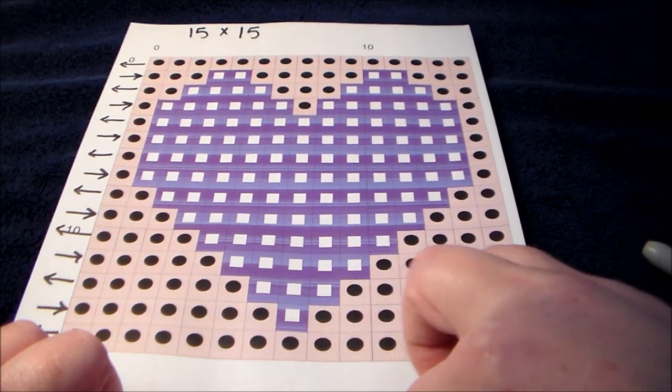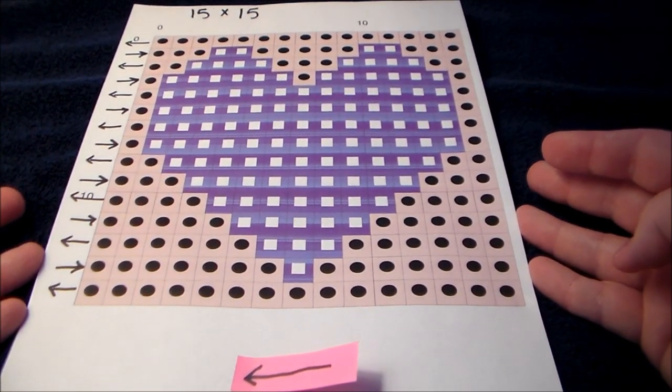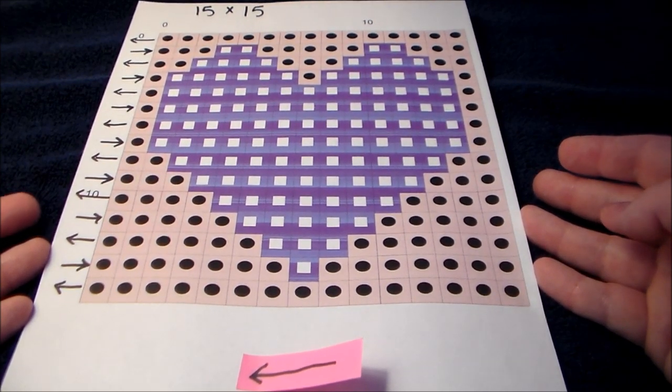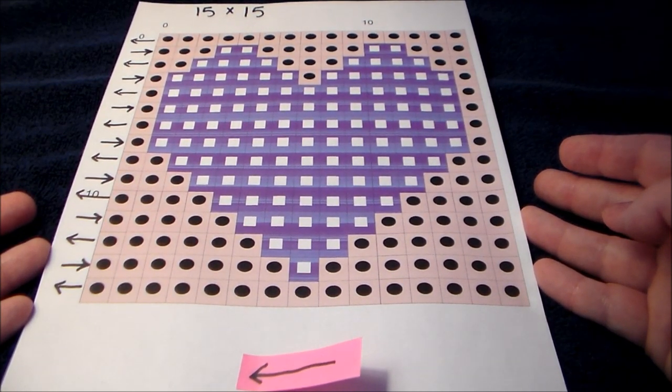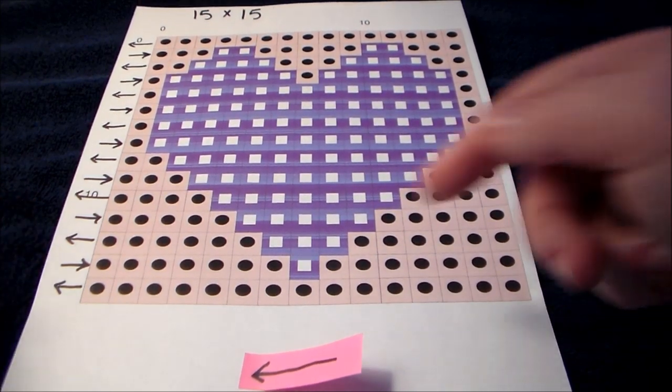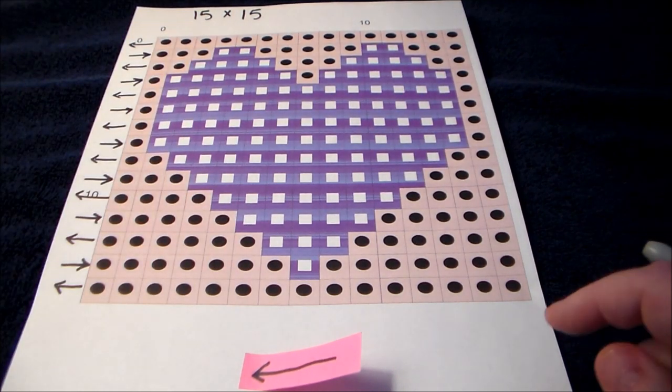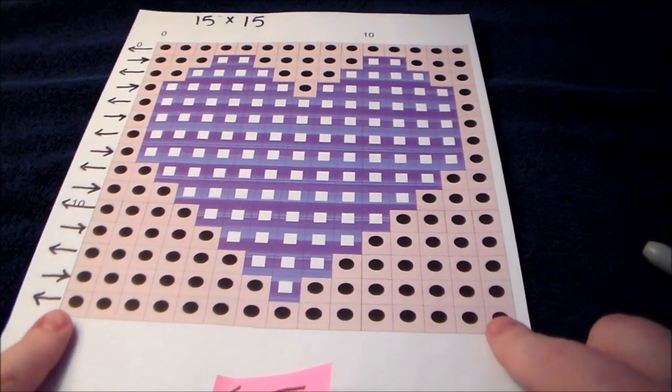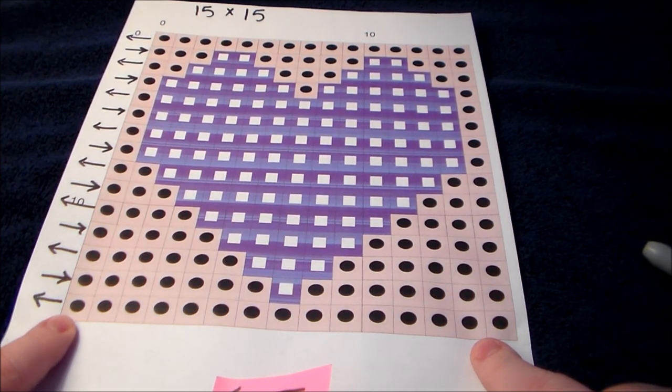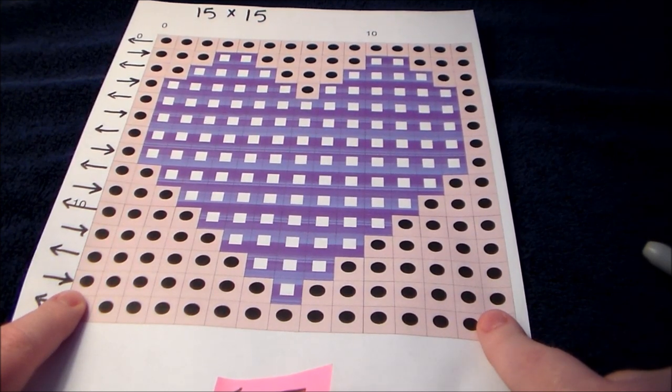What I want you to take away from this video is number one what a graph pattern chart looks like and how to prep it for one of your projects and to identify what size it is. The 15 stitches across by 15 rows up and also that odd rows work right to left and even rows work left to right.